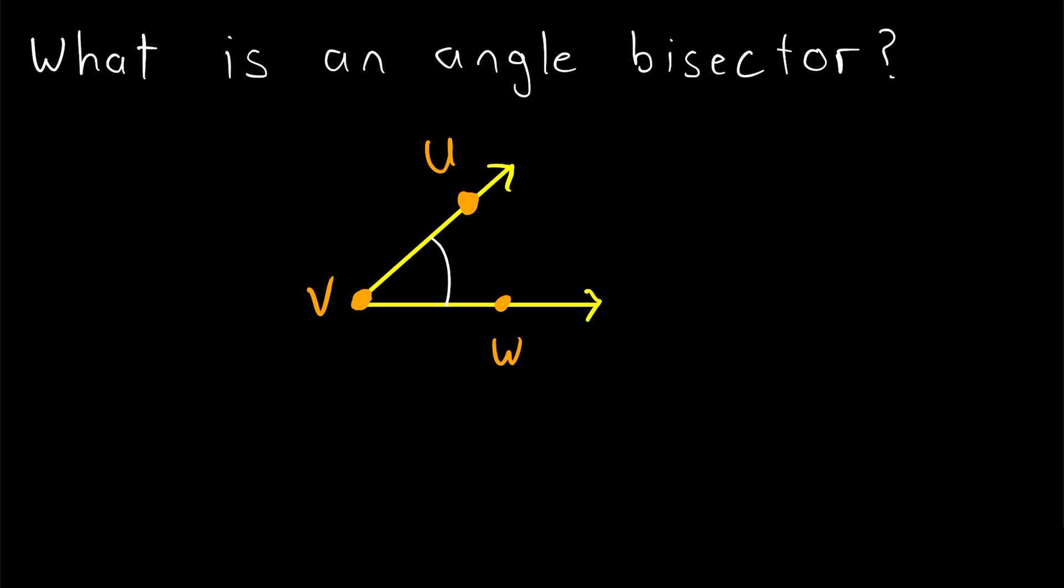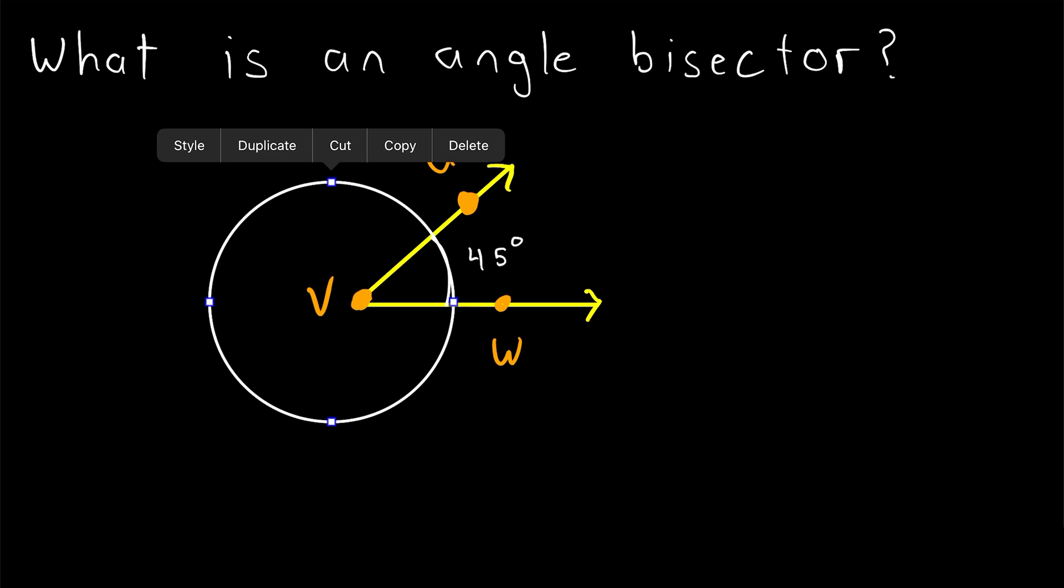Remember that we often measure angles in degrees. So for example, this angle might have a measure of maybe 45 degrees. And for reference, remember that the distance around a circle in degrees is 360.